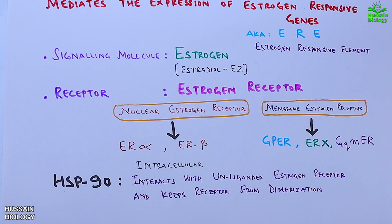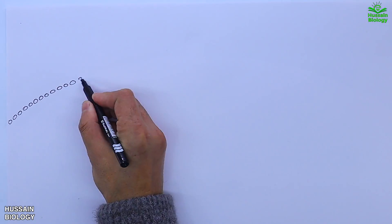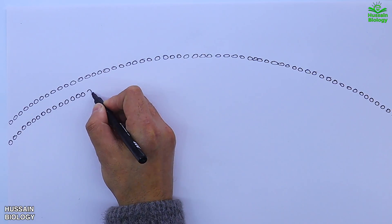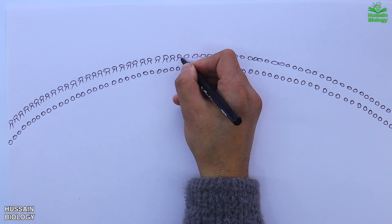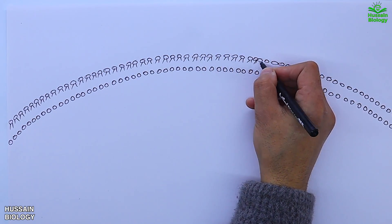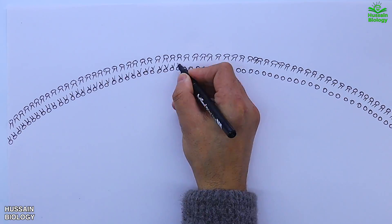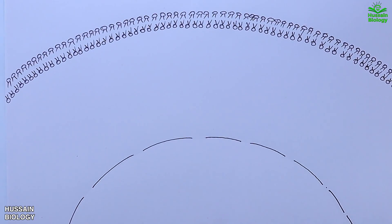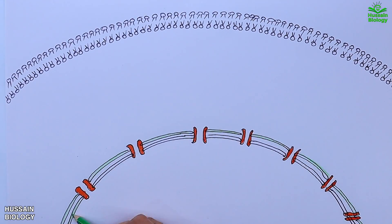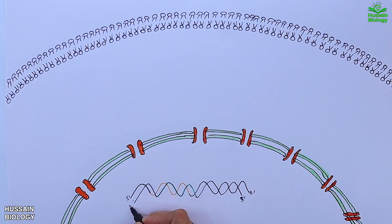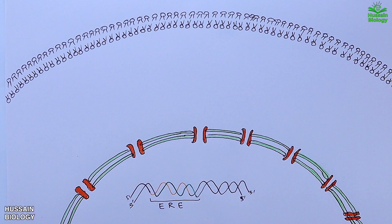Now let's get directly to the signaling pathway. We are going to see signaling through intracellular receptors. In this diagram we can see the cell membrane, and within the cell we have the nuclear membrane.